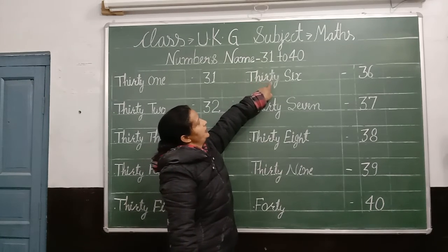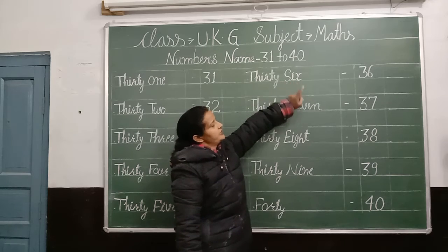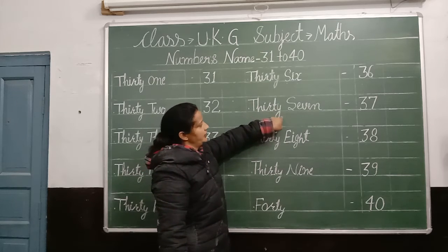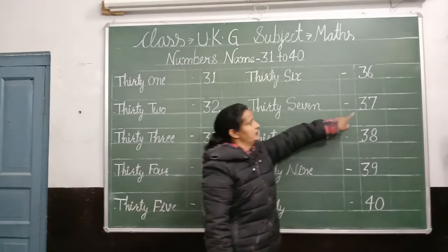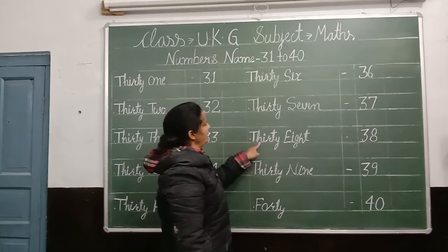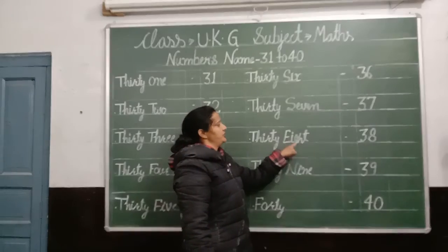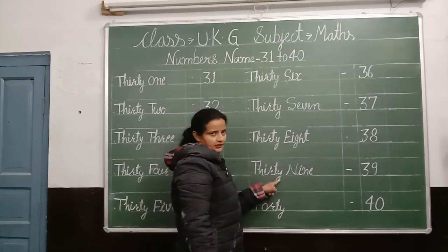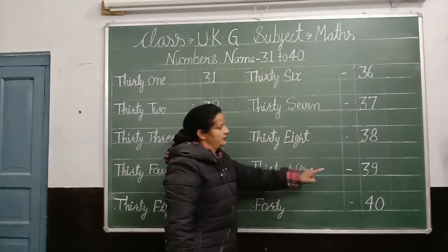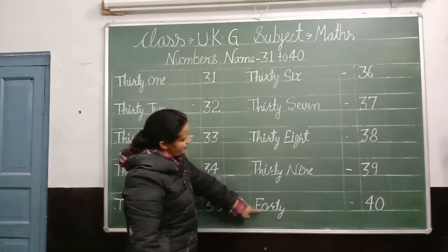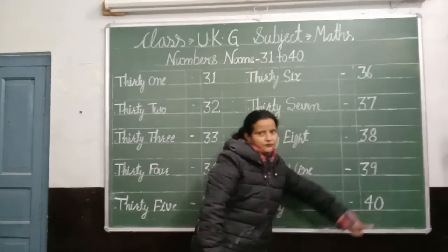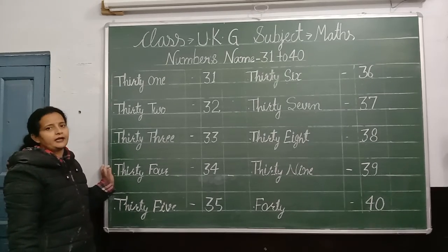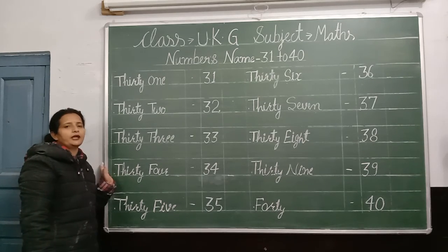T-H-I-R-T-Y S-I-X. Thirty-six. T-H-I-R-T-Y S-E-V-E-N. Seven. Thirty-seven. T-H-I-R-T-Y E-I-G-H-T. Thirty-eight. T-H-I-R-T-Y N-I-N-E. 39. F-O-R-T-Y. 40. This is 40. Okay, you can write with good handwriting 31 to 40. Write with us. Thank you.